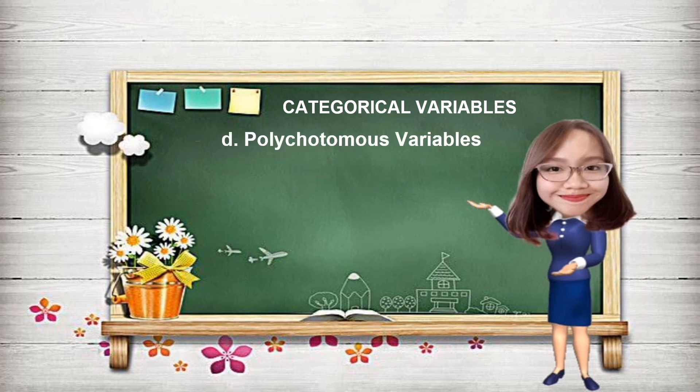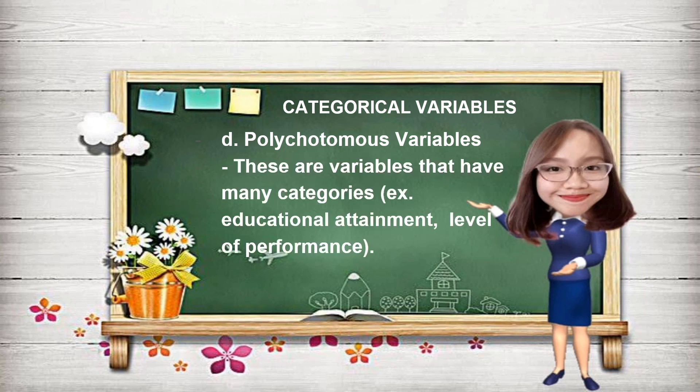Another example under categorical variables are polychotomous variables. These are variables that have many categories. Some examples are educational attainment — elementary, high school, college graduate, and postgraduate — and level of performance — excellent, very good, good, satisfactory, or poor.